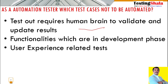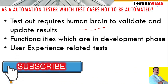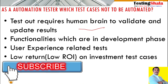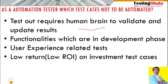The third one is: test cases related to user experience should not be taken for automation. The fourth one is: if there is a low return on investment when bringing in automation — if the test cases chosen do not provide much benefit, then we should not pick those. Every test case selection must be evaluated with return on investment in mind; only if we get a good return on investment should we pick those test cases for automation.